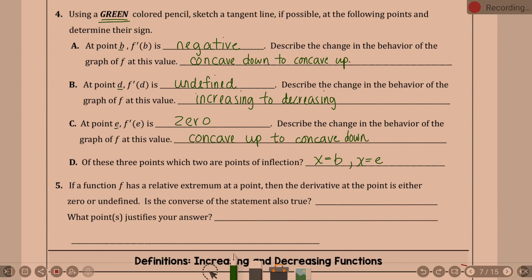Can we answer five real quick that goes with it? If a function f has a relative extremum at a point, then the derivative of the point is either zero or undefined. Is the converse of the statement true? Do you remember converse? Converse is the opposite, right? This is flipping the f and then. Yeah. So the converse is, let me write this so we have it.